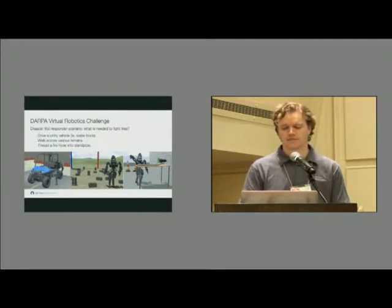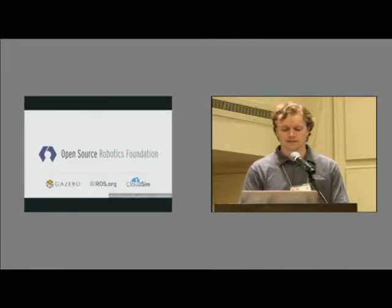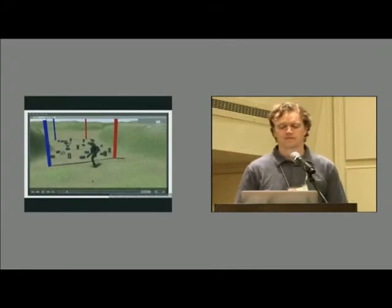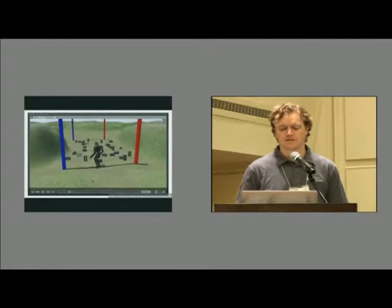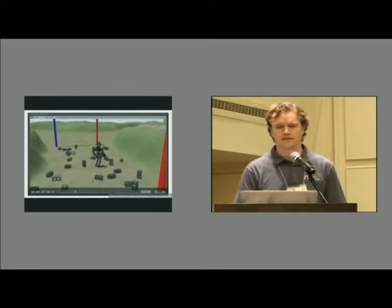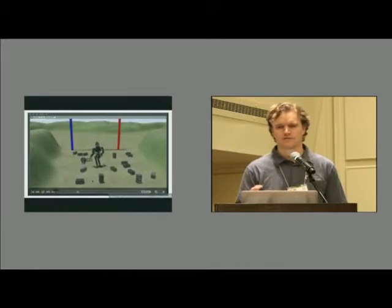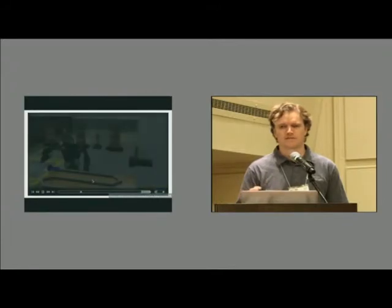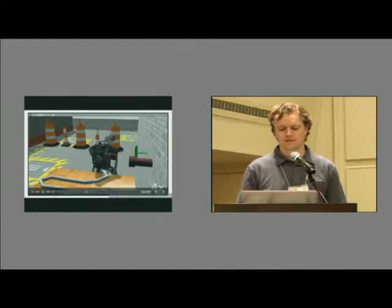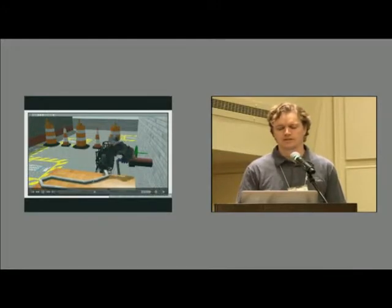This is a video showing one of the team's approach to this obstacle course. It's important to note that this rendering was created after the fact from a log file and they didn't have access to this view. They had more of an RViz view which was just the sensors available to the robot, and they did eyes-off teleoperation which is pretty impressive. This is the fire hose task to test manipulation, and the robot we're simulating is Boston Dynamics' humanoid robot called Atlas, shown here with Sandia hands.